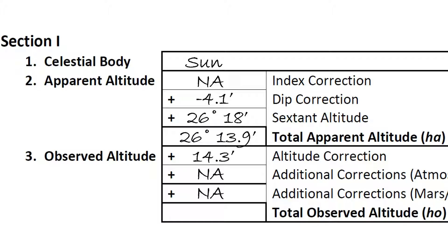To obtain our observed altitude, we simply add all our corrections to our apparent altitude in arc minutes, remembering to instead subtract if we have a negative correction. In our example, we add 14.3 arc minutes for our altitude correction to our apparent altitude of 26 degrees and 13.9 arc minutes, which gives us a total of 26 degrees and 28.2 arc minutes. This is our observed altitude, commonly known by the abbreviation HO.